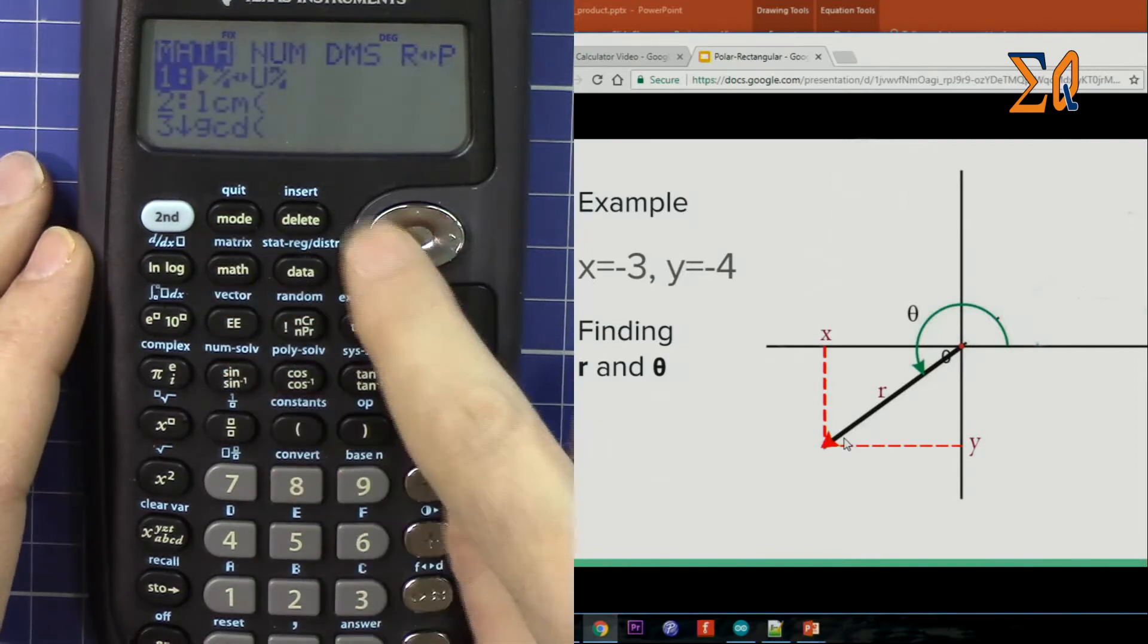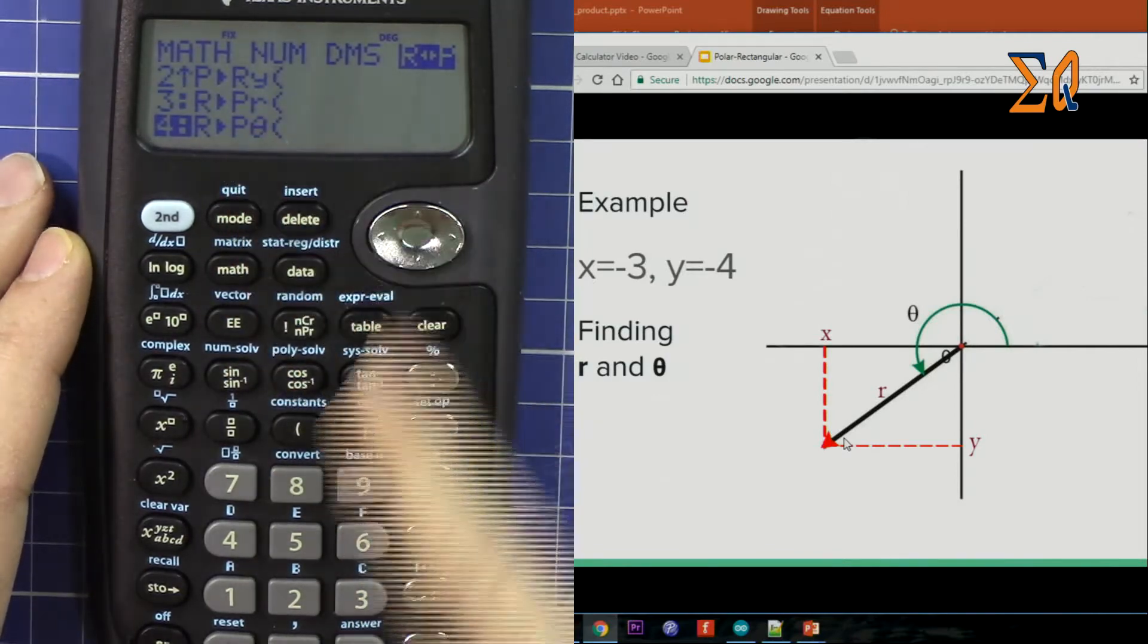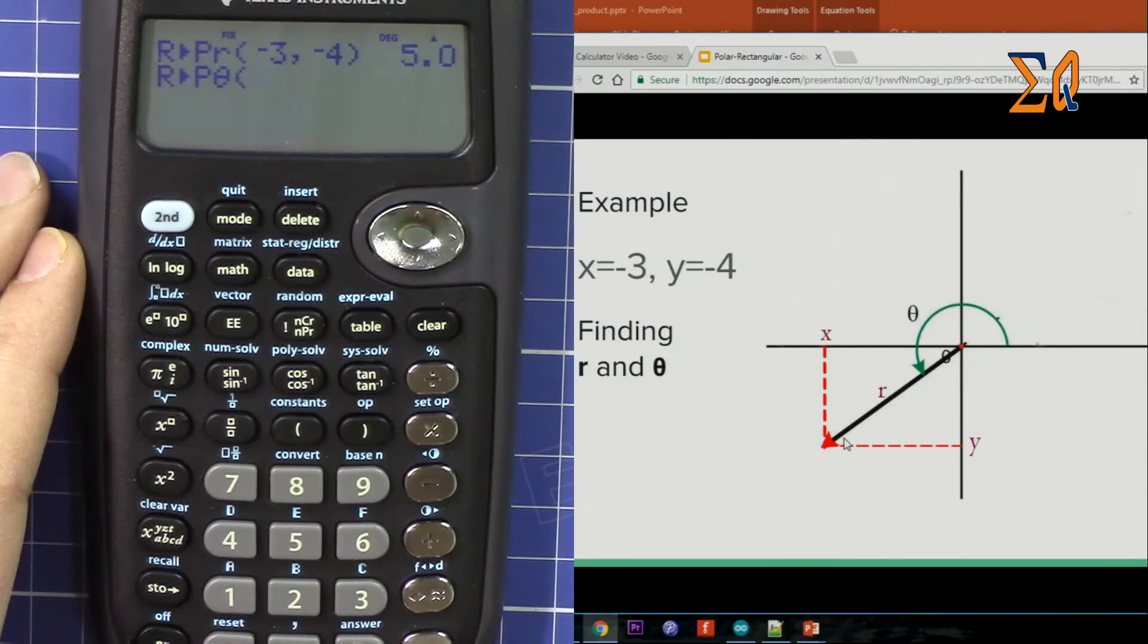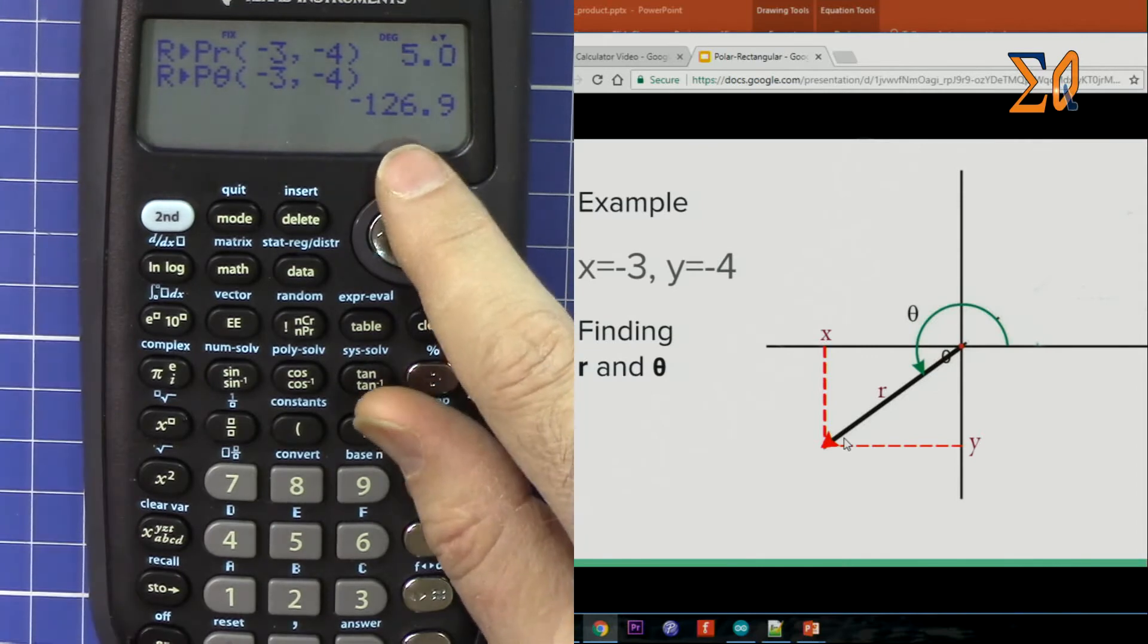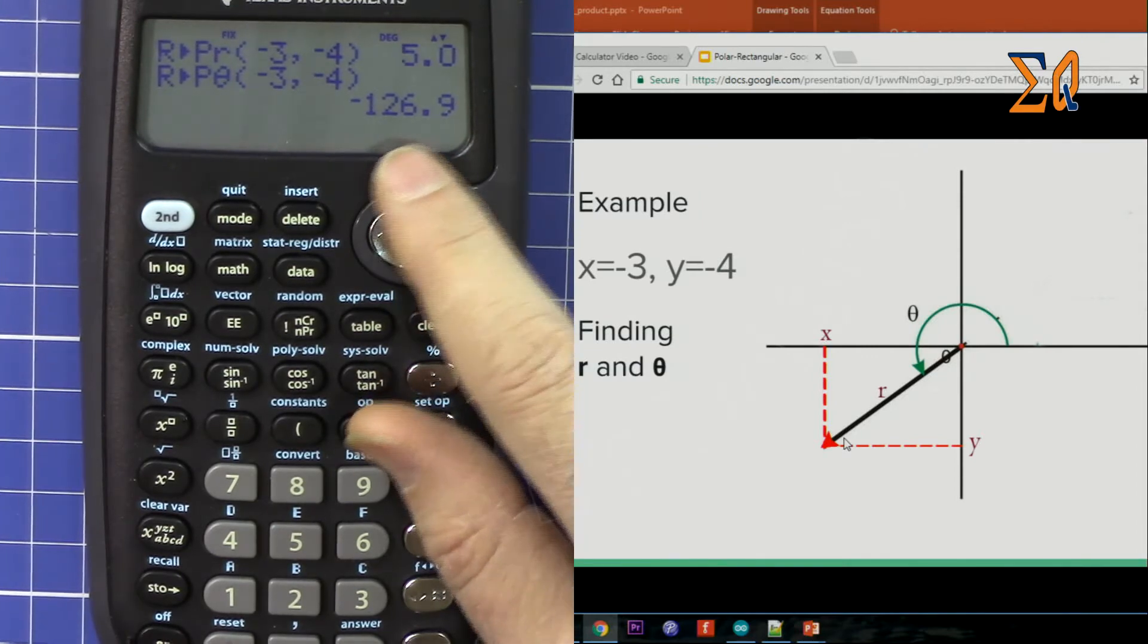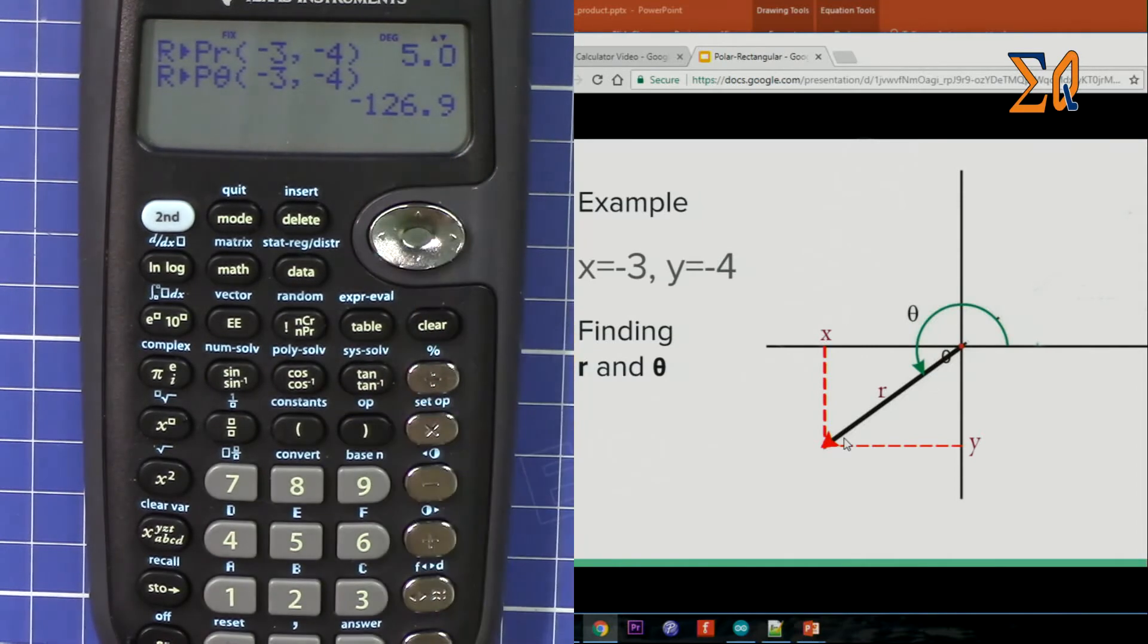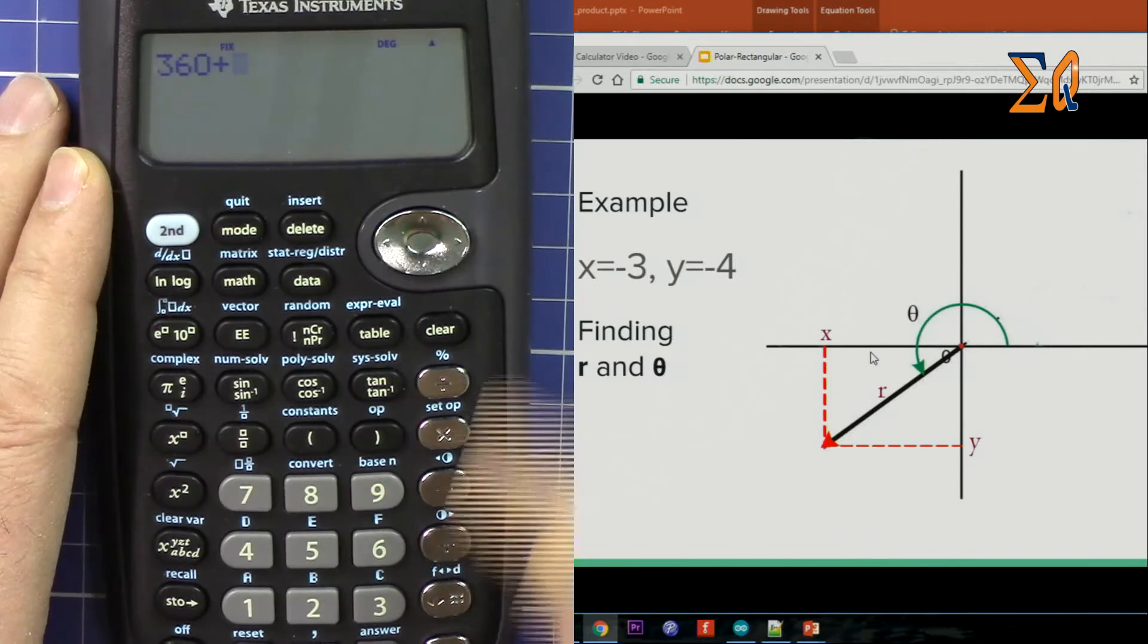Now let's get the theta. Now 4 for theta. So minus 3, second function, comma, minus 4. This angle is minus 126. When they say minus 126, then it has been calculated from here, minus 126.